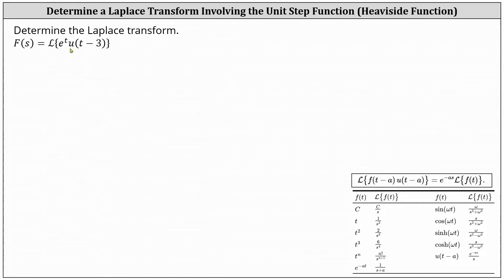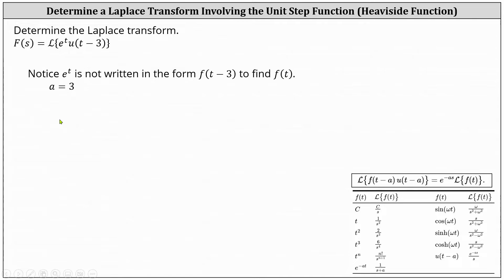Analyzing the given function, because of the u of the quantity t minus three, we know a is equal to three. However, the function e to the t is not written in the form of f of the quantity t minus three, so we cannot easily determine f of t.